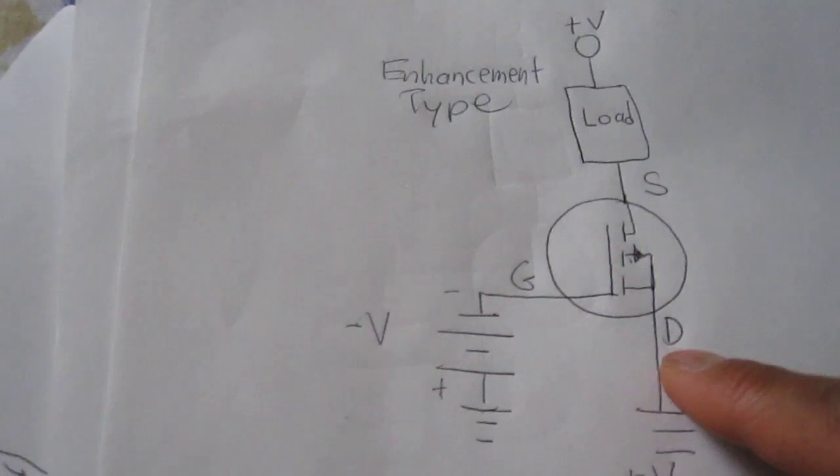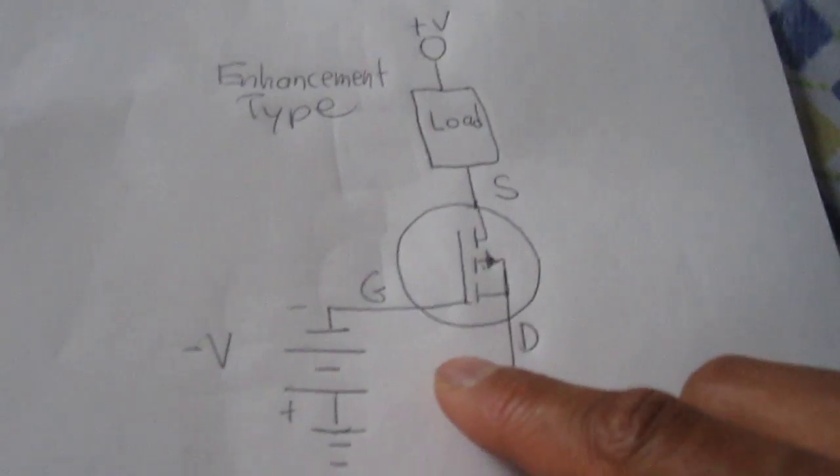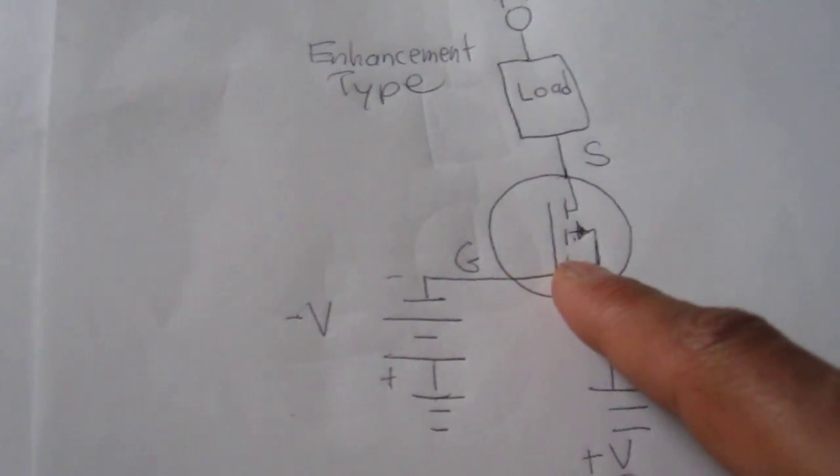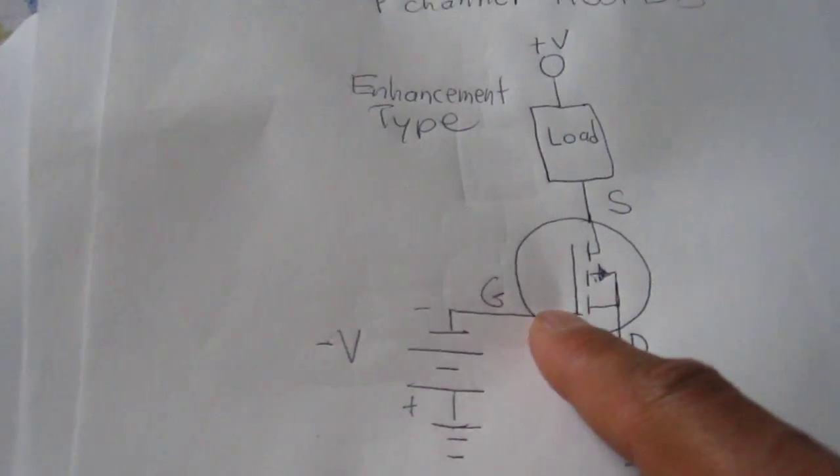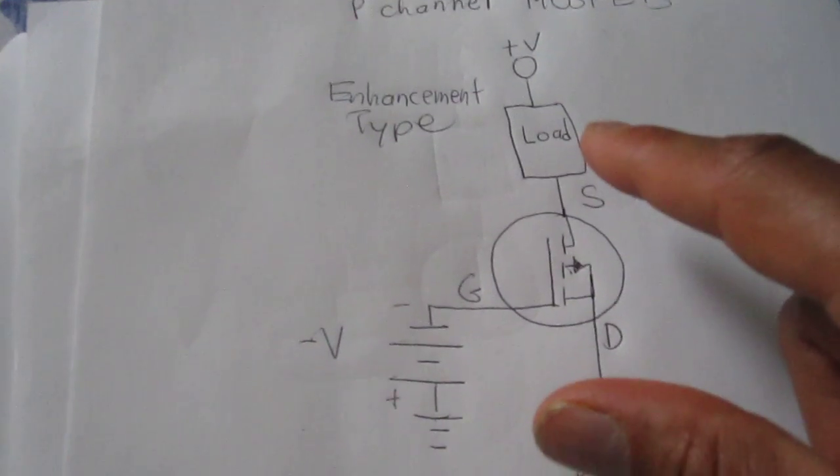The drain gets connected to ground, and we have to give it sufficient negative voltage to the gate terminal to turn it on. We apply negative voltage to the gate terminal to turn on an enhancement type MOSFET.